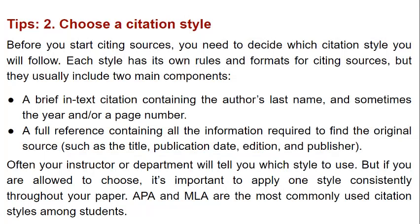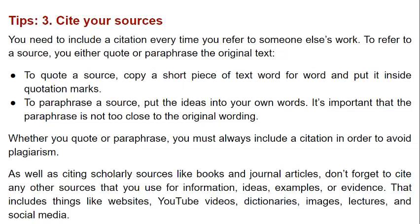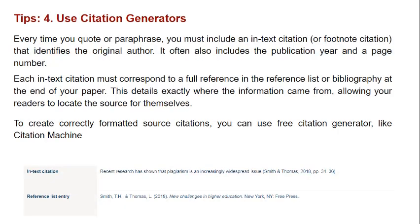Each style has its own rules and formats for citing sources, but they usually include two main components: number one, a brief in-text citation in brackets; and number two, a full reference containing all the information required to find the original source, such as the title, publication date, edition, and publisher. Cite your sources — whether you quote or paraphrase, you must always include a citation in order to avoid plagiarism. To create citations, you can use citation generators, many of which are available on the internet — one example is Citation Machine — and you can automatically create in-text citations and reference list entries.